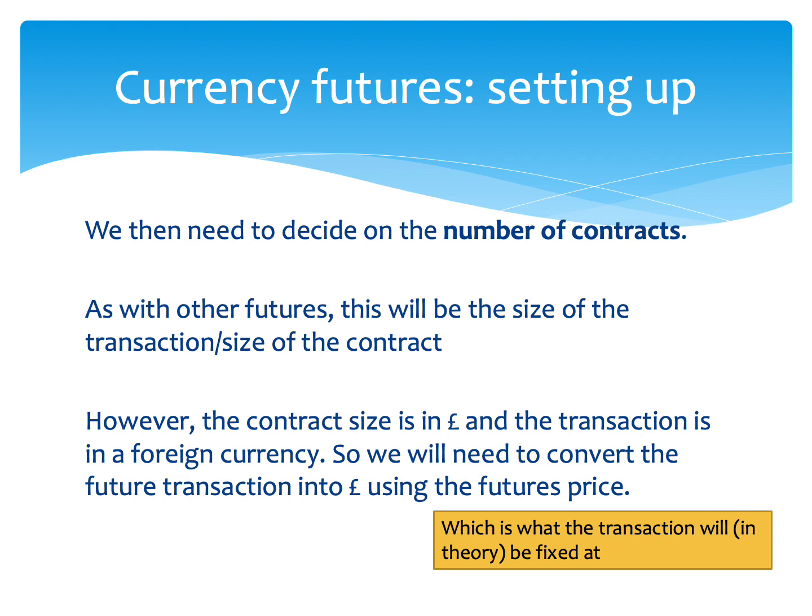So you have to convert the transaction you are trying to hedge into sterling. The rate we do that at is the rate based on the futures price — whatever the future you're hedging with is currently trading at. That's the exchange rate we use to convert the future transaction into sterling to figure out the number of contracts. In theory, it's what that transaction is going to be fixed at — the futures price.